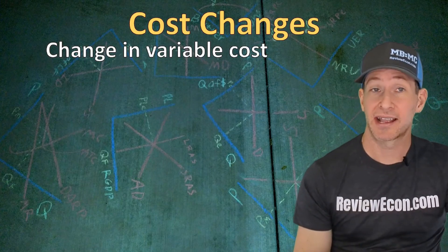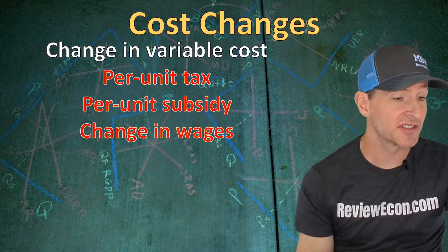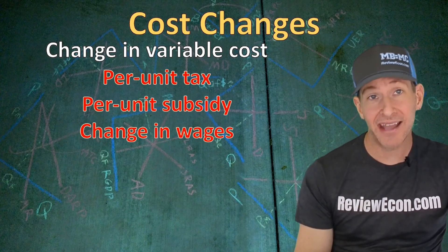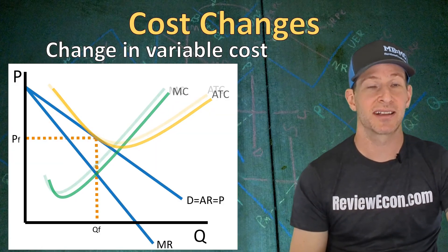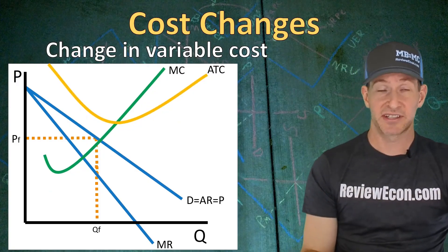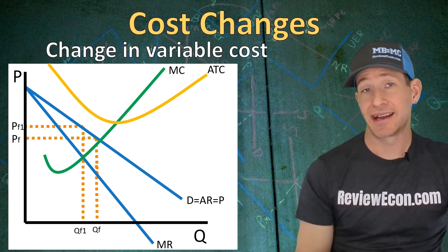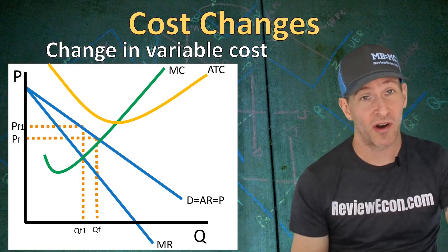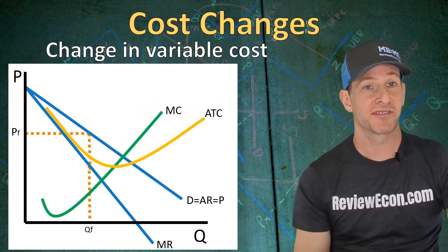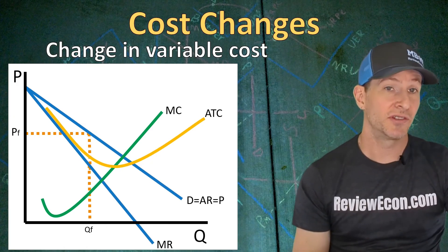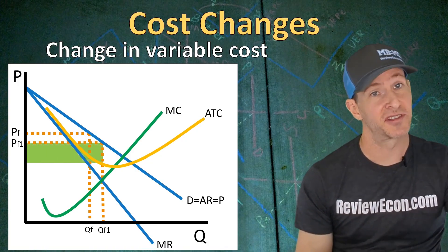If we see changes in variable costs — like a per unit tax or subsidy, or changes in the price of an input like wages — we'll see shifts in both the ATC and marginal cost curves. An increase in variable cost shifts both curves upward, giving a new MR equals MC point at a lower quantity and higher price on the demand curve, and creating economic losses. A decrease in variable cost shifts both curves downward, giving a higher profit maximizing quantity and lower profit maximizing price, creating economic profits in the short run.